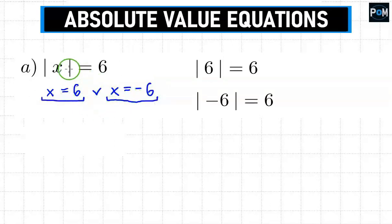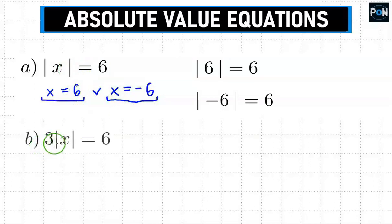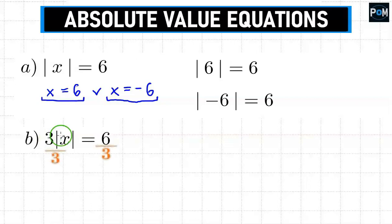Generally, equations with absolute value will most often have two solutions. In example b, it's a bit different. We have this 3 in front here. We have to get rid of this 3, so we're removing this number. We always eliminate what is outside the absolute value. We don't want this 3 here, so we divide both sides of the equation by 3.